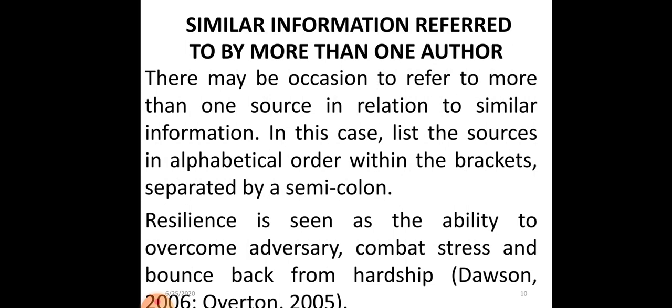Sometimes similar information is referenced by more than one author. There may be occasion to refer to more than one source in relation to similar information. In this case, list the sources in alphabetical order within the bracket, separated by a semicolon. For example, Dawson comes first and Overtone later because alphabetically D comes before O, and they are separated by a semicolon.